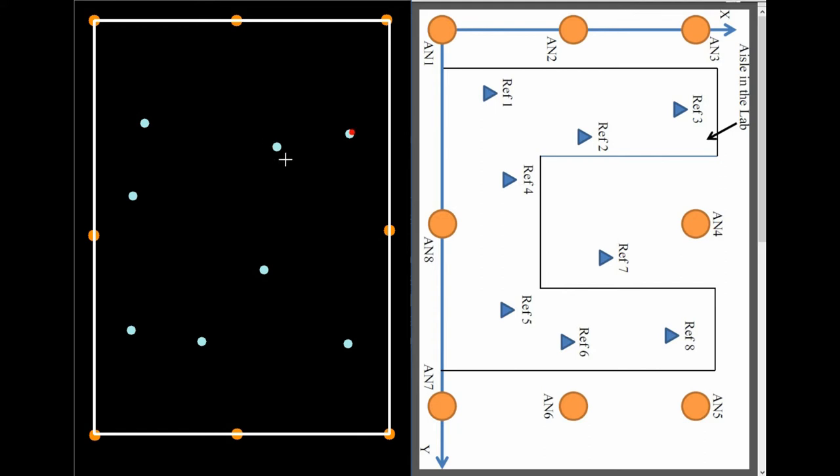Reference points are marked with blue circles, and the red dot is the estimated target position. Now I'll put the target at reference 3, then I'll move it to reference 2, and then I'll move it to reference 1.